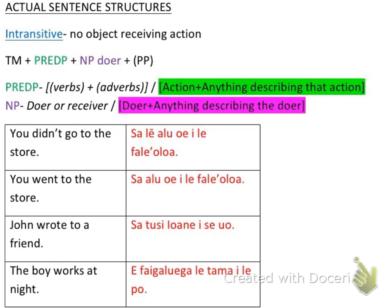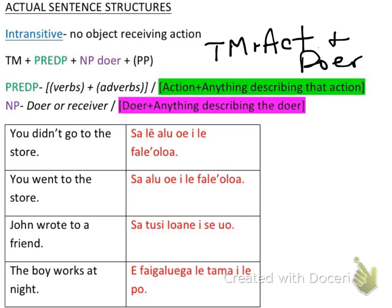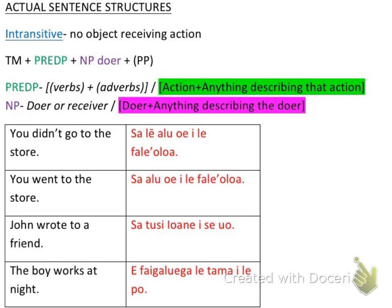So moving on, we're going to be learning about actual sentence structure. Before, I was talking to you about tense marker, action, doer. That is something I created on my own to help you build up to putting together entire sentences. Tense marker, action, doer is not a legitimate sentence structure — it's just the beginning of a sentence structure. To look at the complete real sentence structure, there's a different one for intransitive verbs and a different one for transitive verbs. We're going to be talking about intransitive first — that is the one that has no object receiving an action.